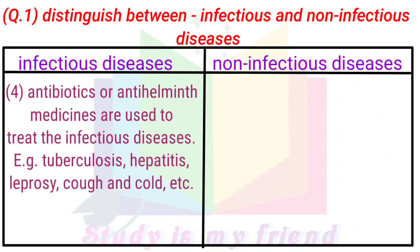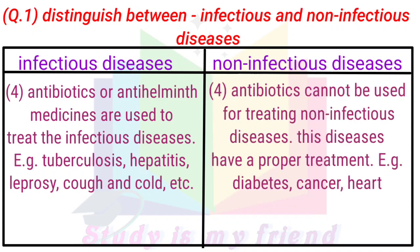Antibiotics or antihelminthic medicines are used to treat infectious diseases. Examples include tuberculosis, hepatitis, leprosy, cough and cold, etc. Antibiotics cannot be used for treating non-infectious diseases; these diseases have proper treatments. Examples include diabetes, cancer, heart disease, etc.